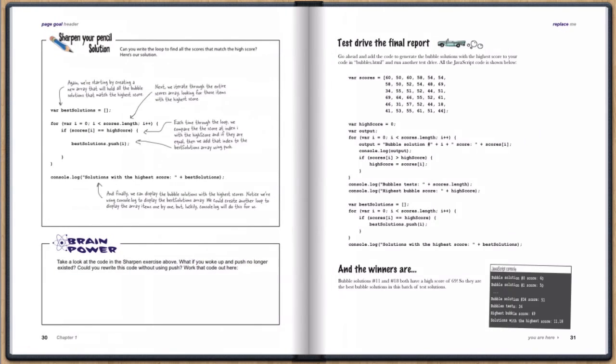There are a couple of different ways to add values to an array. So, we take you through those and show you how to add values to an empty array so you can find all the bubble solutions that got the highest test score and store them in the new array. You'll have to read the chapter to find out which bubble solutions had the highest scores.